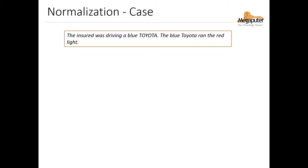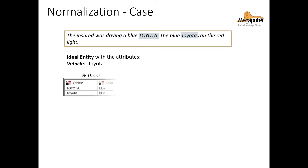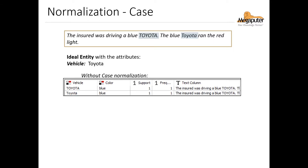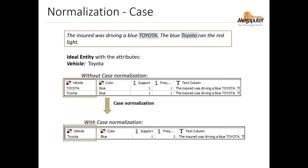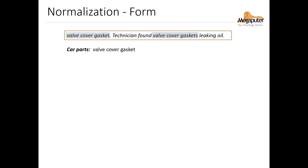Let's take care of our case normalization issues. Suppose we have the following text: 'The insured was driving a blue Toyota. The blue Toyota ran the red light.' We want to capture the vehicles as entities, and we'd like to capture Toyota as one entity. But without normalizing the case, the system treats the two instances of this entity as two different entities. When we use case normalization, the system understands that this is a single entity and the frequency increases to two.